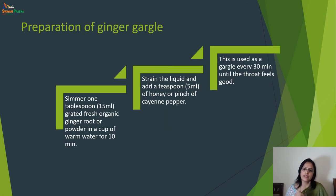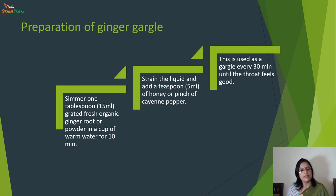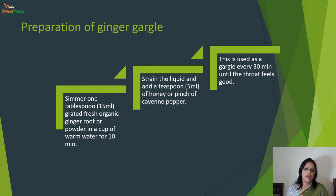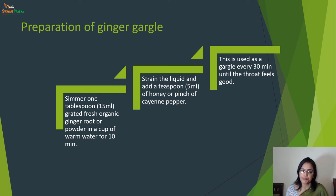Here is another example: an herbal gargle prepared using ginger. Simmer 1 tablespoon (15 ml) of grated fresh organic ginger root or powder in a cup of warm water for 10 minutes. Strain the liquid and add a tablespoon (15 ml) of honey or a pinch of cayenne pepper. This is used as a gargle every 30 minutes until the throat feels better. This is a ginger gargle for throat infection.